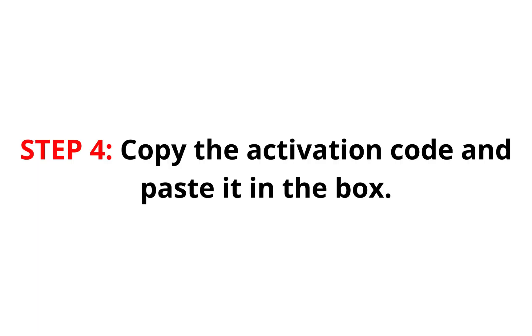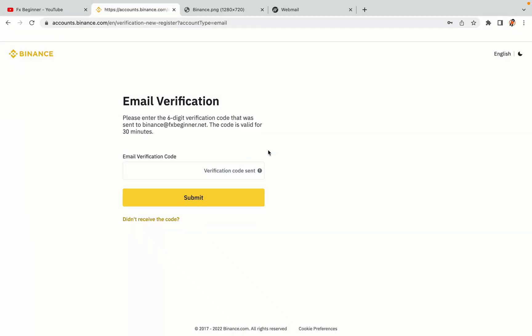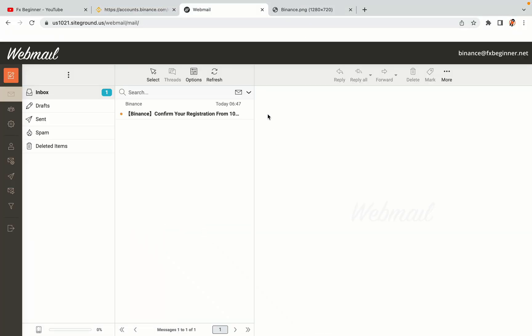Step 4: A confirmation code will be sent to your mail. Open your mail inbox, copy the code and paste it in the box to fully activate your Binance trading account.